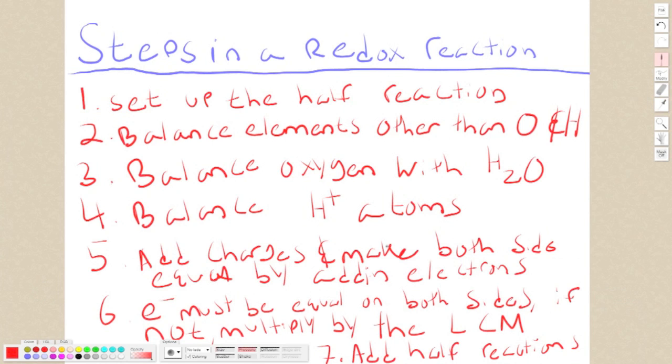Step five: add up the charges and make both sides equal by adding electrons. Step six: all electrons on both sides must be equal. If not, multiply each side by the lowest common multiple. And step seven: add together the half reactions.